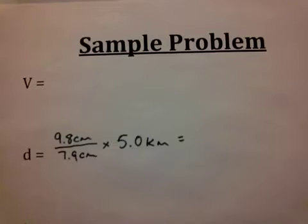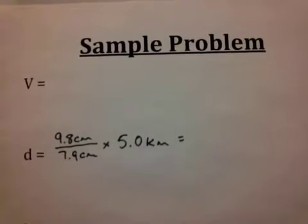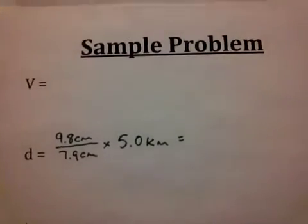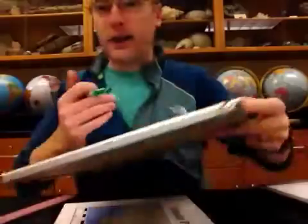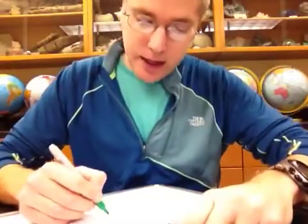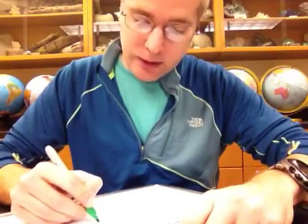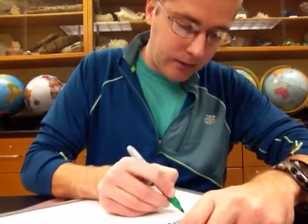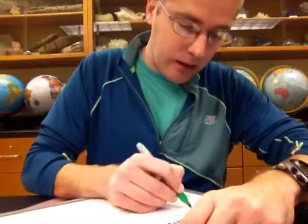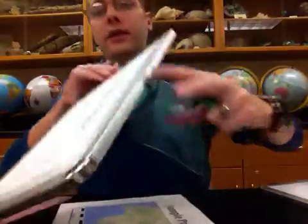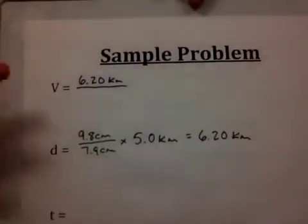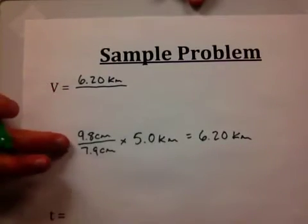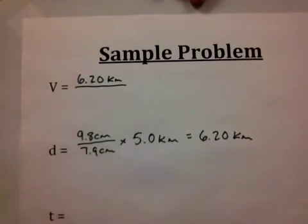You will see centimeters over centimeters will cancel and when we punch that into our calculator our answer will be left in kilometers and it will be equal to 6.20 kilometers. We can go ahead and write that in for the velocity portion also because velocity equals distance over time so we put that on top.